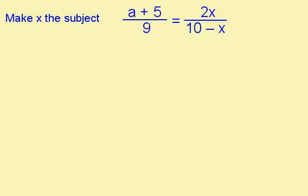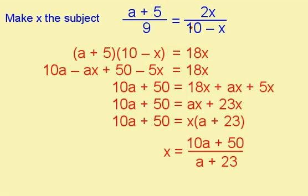Here's another question for you to do — press pause and have a go. When you're ready for the answer, press play. The 10 minus x has gone up the escalator here, and the 9 has gone up the escalator here, giving me 9 times 2, which is 18. The brackets have been multiplied out. I'm trying to make x the subject of the formula, so I'm going to get all the x's on one side and everything else on the other side. I've simplified this to give me ax plus 23x, and then I've factorised. To finish, to get x on its own, I need to do this divided by this.